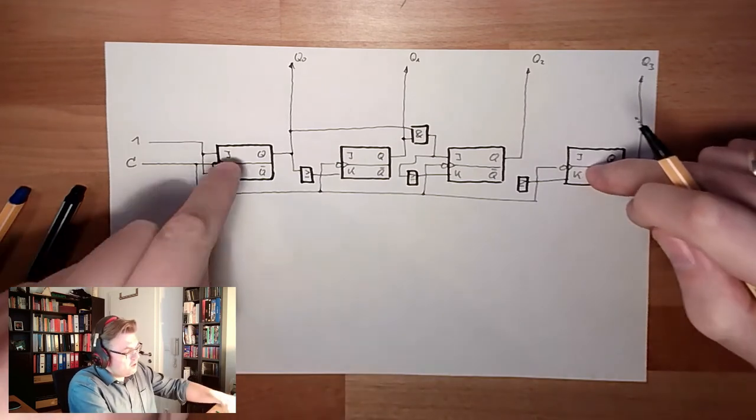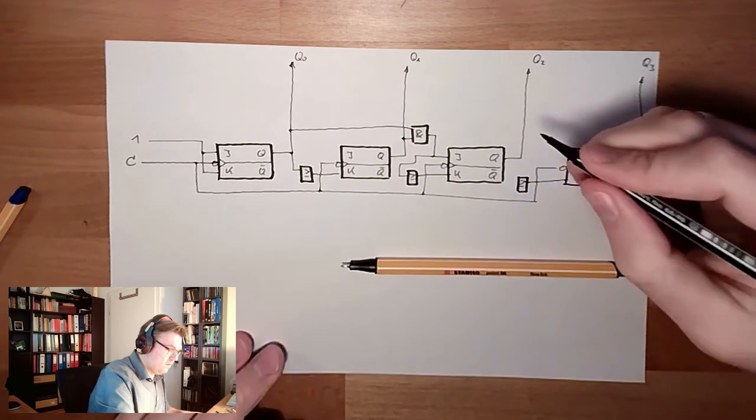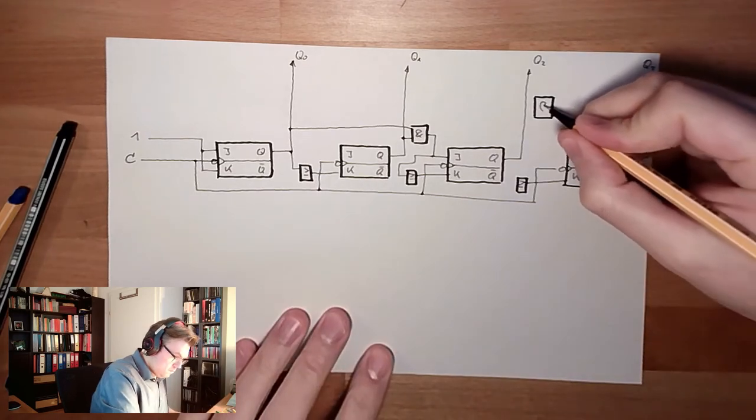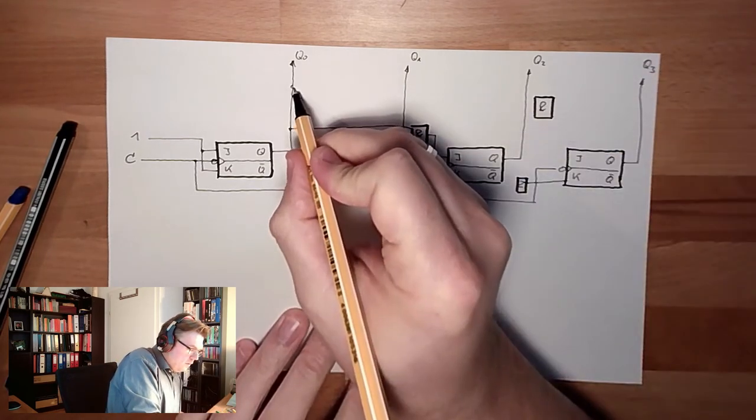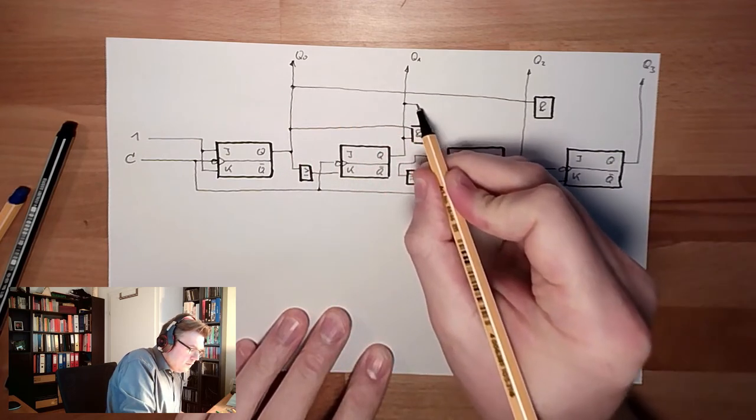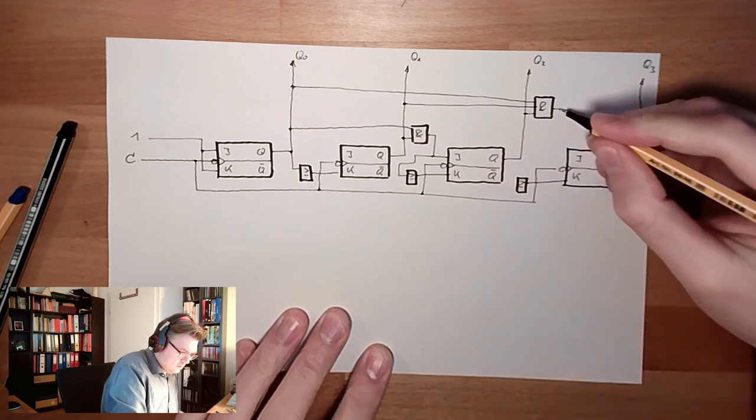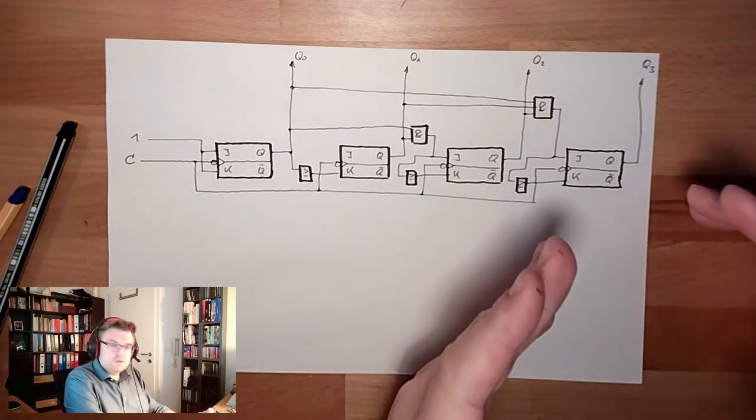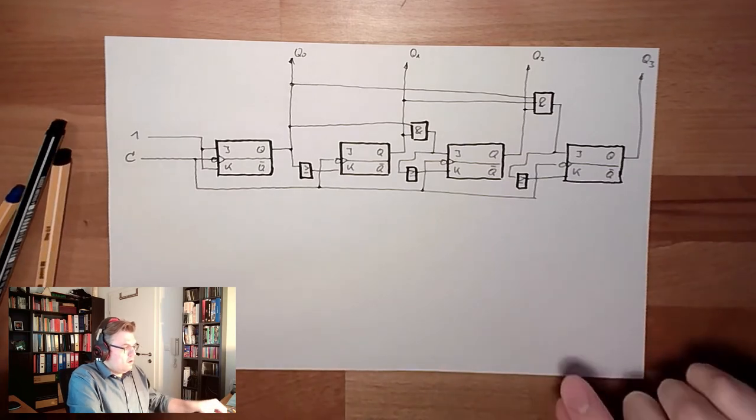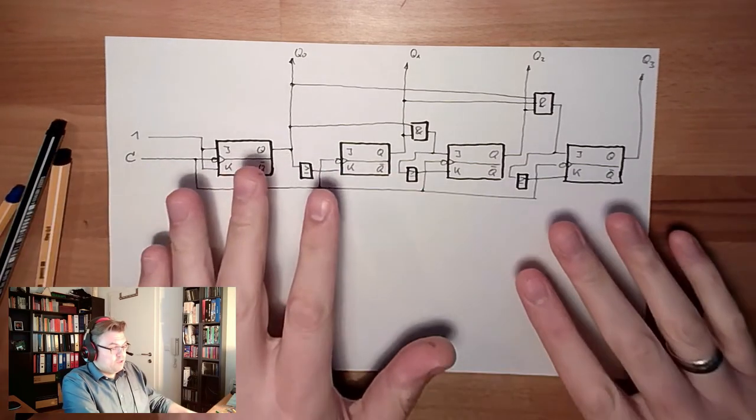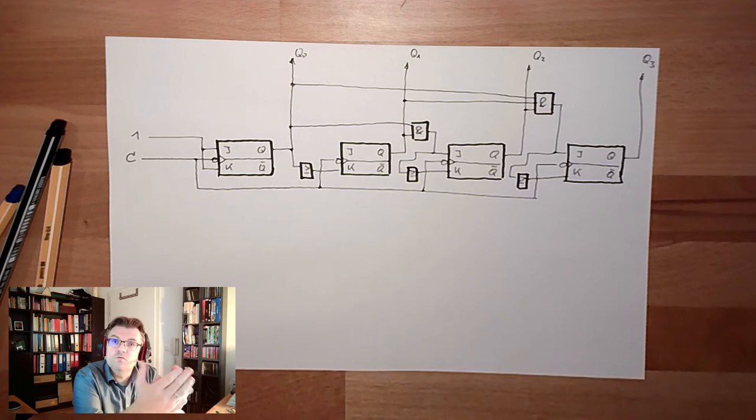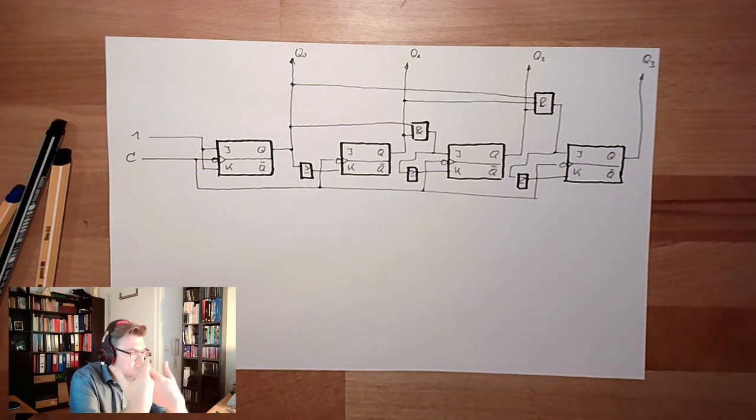This one shall toggle if this and this and this are one. So again, I have an AND. And I want to have this and this and this. So I'm setting J and K to one, and so on and so on. So here, there is not the logic inside the chain of flip-flops. The logic is built outside, and it's following the rules for numbering systems. When do I need the next digit?